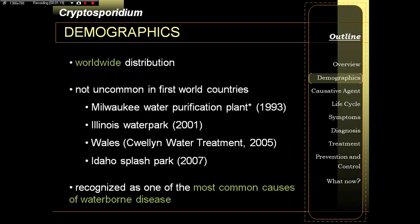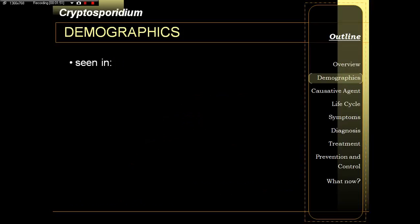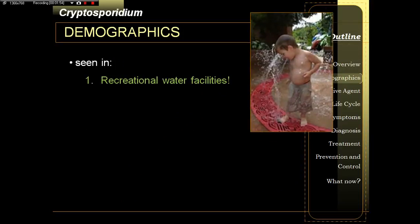We begin with cryptosporidium. It is a coccidian which is not uncommon in first-world countries, meaning first-world countries would have significant cases of cryptosporidiosis. As you can see — water purification plants, water parks, water treatment plants — we have a clue where you get cryptosporidiosis. It is recognized as one of the most common causes of waterborne diseases, seen in recreational water facilities.